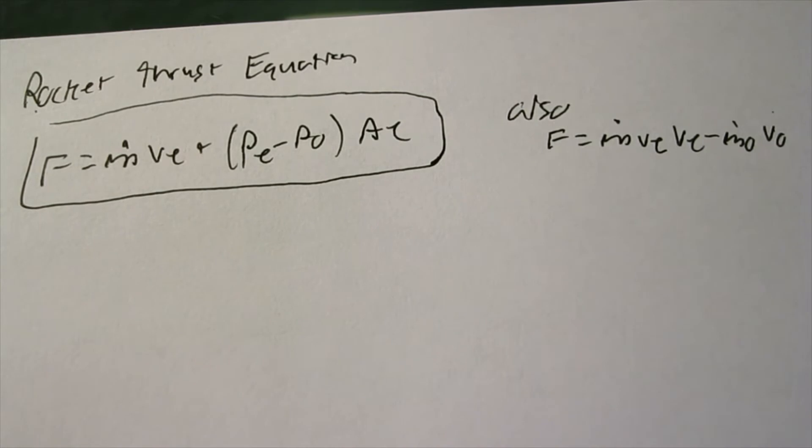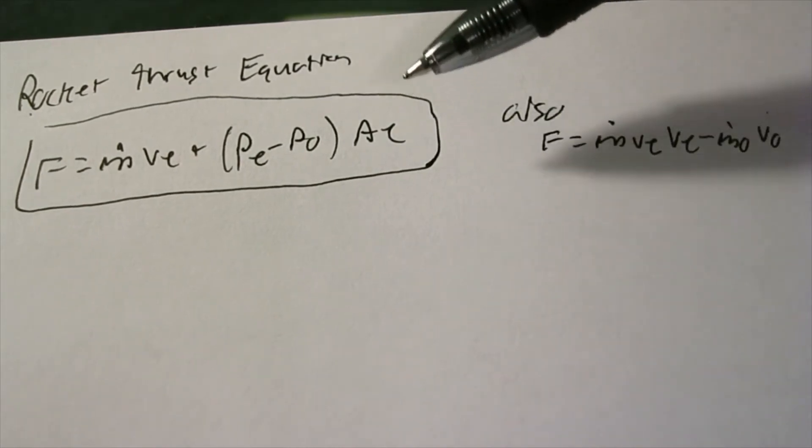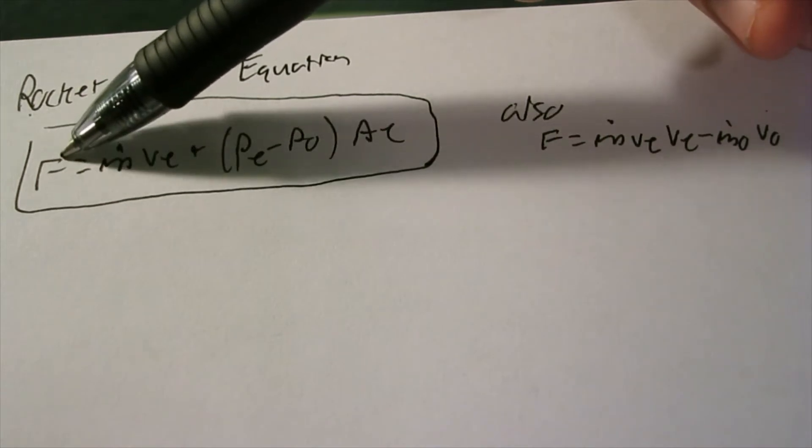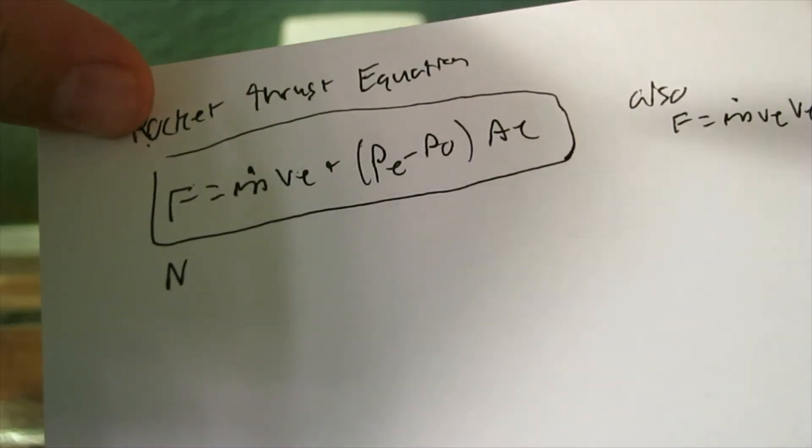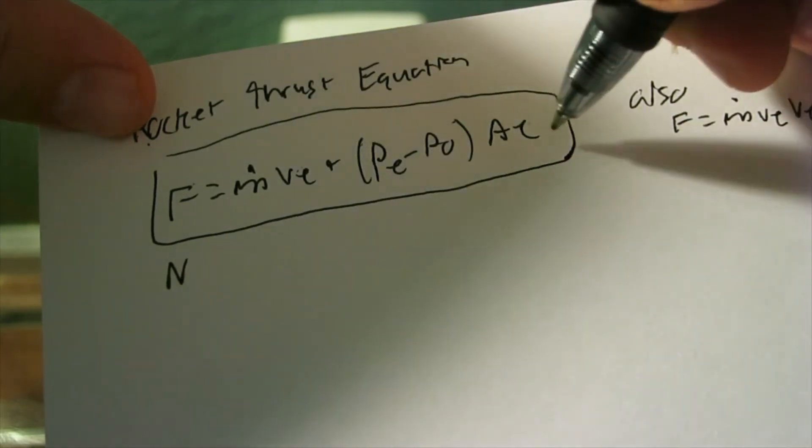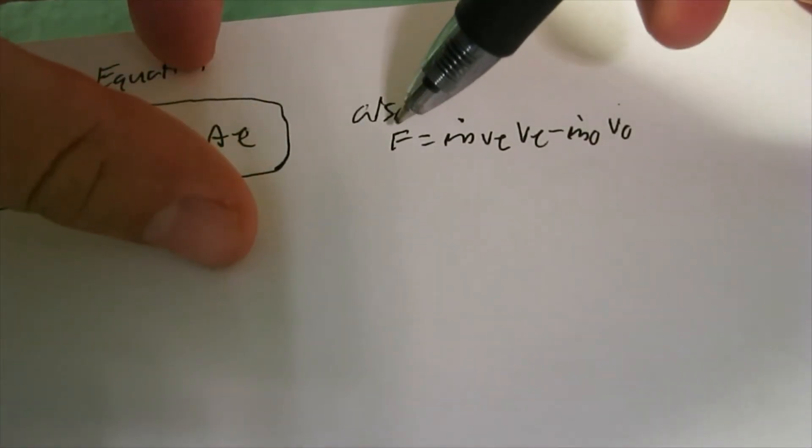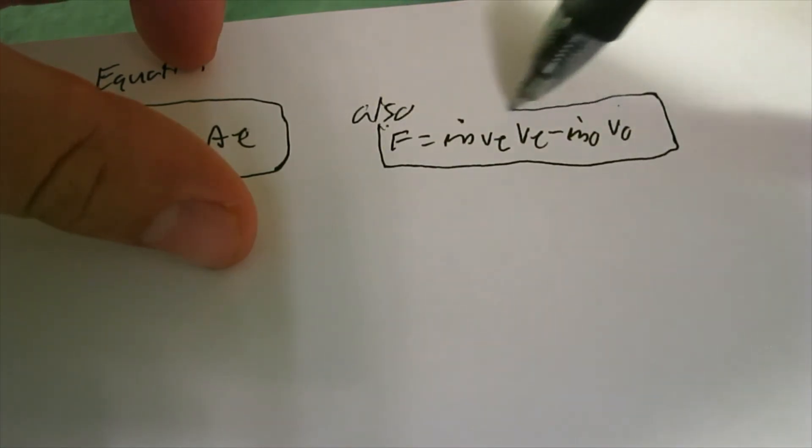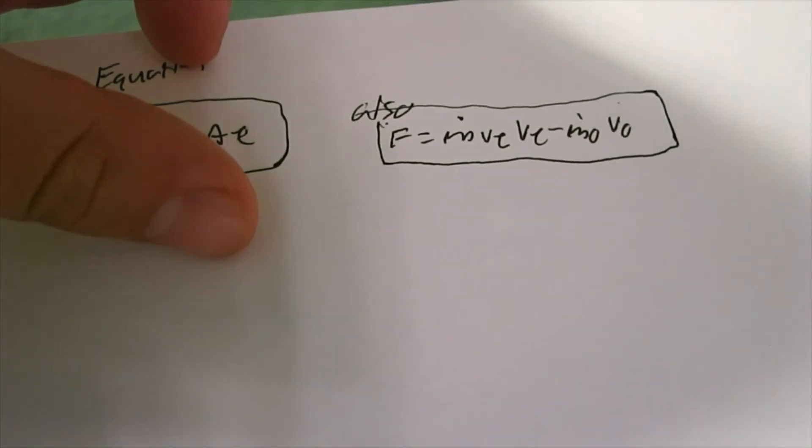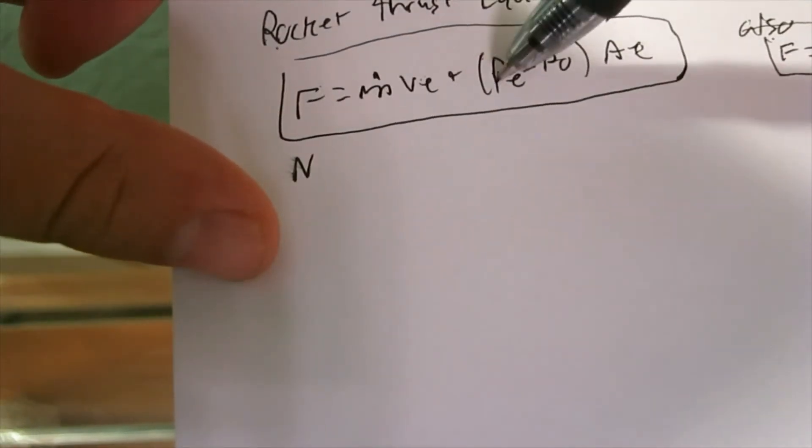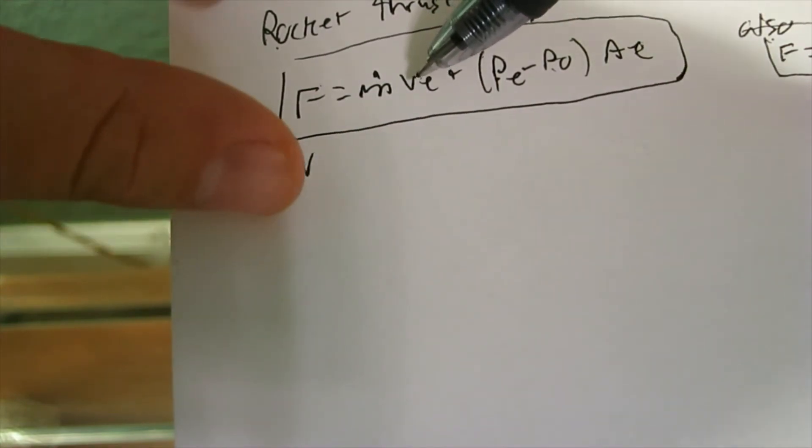Now we're going to talk about the rocket thrust equation, which is this equation right here. The force of thrust, in units of newtons, equals the mass flow rate times the velocity at the exit, plus the pressure difference between the exit of the nozzle and the ambient air pressure times the area of the exit. This is a general equation for thrust. But for a rocket, we're assuming that the original velocity and mass flow rate kind of start at 0, so we can ignore this, and we're just left with this difference of pressures and the mass flow rate at the exit.